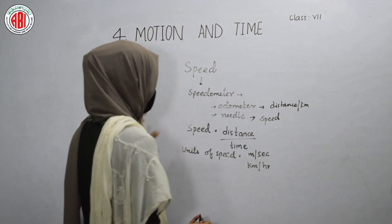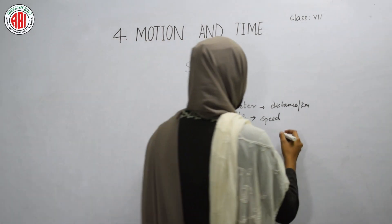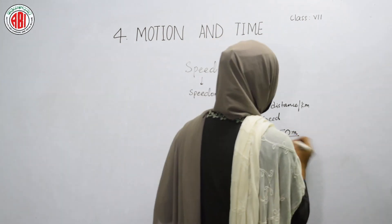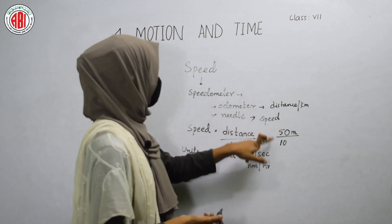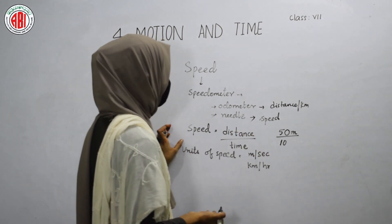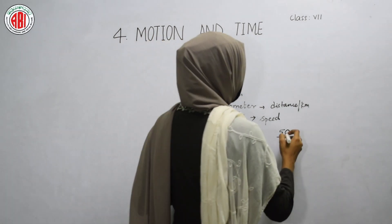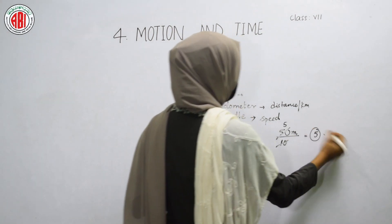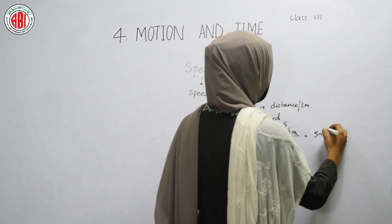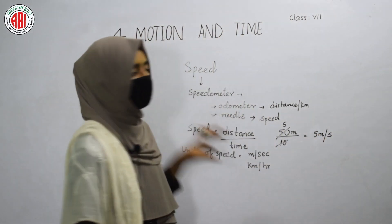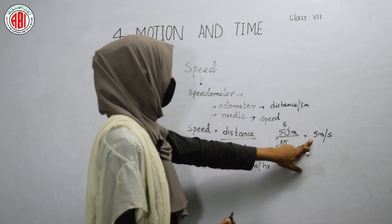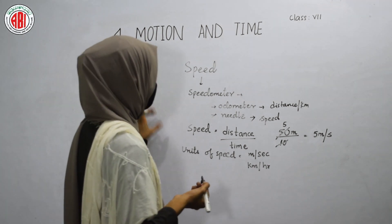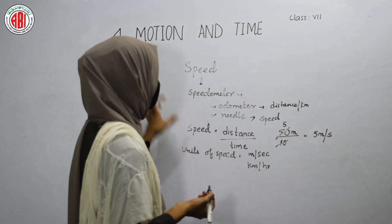Let us take one example to calculate speed. If a car moves 50 meters within 10 seconds, we can calculate the speed using the given data: distance is 50 meters and time is 10 seconds. Speed equals distance divided by time, so the average speed of the car is 5 meters per second — meaning it is traveling 5 meters per second. In this way, we can calculate the speed of any object using the formula distance divided by time.